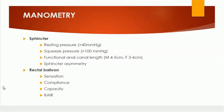Manometry is another way to assess anal incontinence. We can assess the resting pressure, which is more than 40 mmHg, and the squeeze pressure when the patient is squeezing, which is more than 100 mmHg. We can also assess functional anal canal length with manometry, which is usually between 4 to 5 cm — in females it is 3 to 4 cm. Sphincter asymmetry can also be assessed.